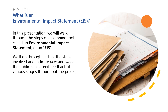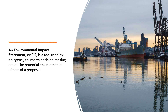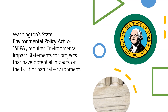An environmental impact statement, or EIS, is a tool used by an agency to inform decision making about the potential environmental effects of a proposal. Washington State Environmental Policy Act, or SEPA, requires environmental impact statements for projects that have potential impacts on the built or natural environment.